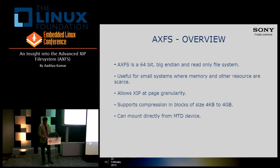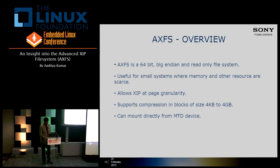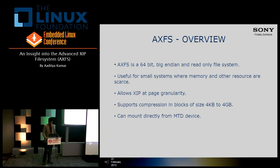AXFS is basically a 64-bit file system. That is very important because it differentiates it from CramFS and SquashFS — CramFS has size limitations as we know. It is big-endian and it is a read-only file system. It allows XIP at page granularity, which is very important. It supports compression, sizes from 4 KB to 4 GB, and it can directly mount from an MTD device.